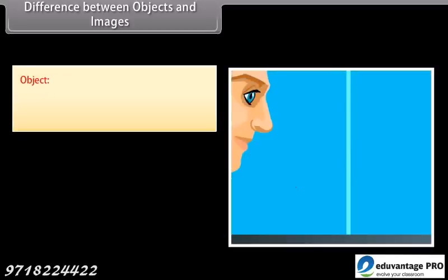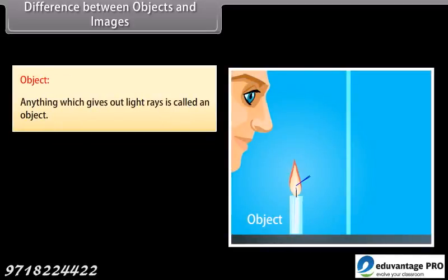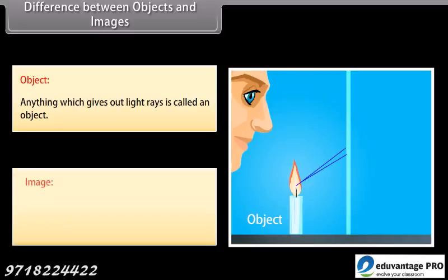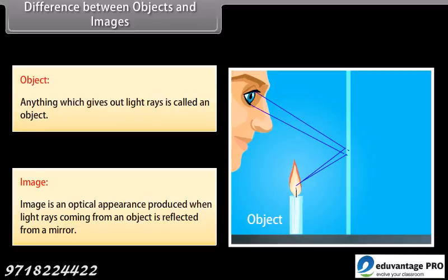Difference between objects and images. Object: anything which gives out light rays is called an object. Image: an image is an optical appearance produced when light rays coming from an object are reflected from a mirror.